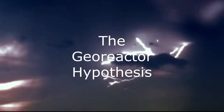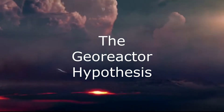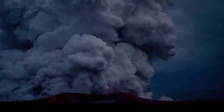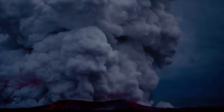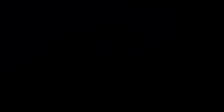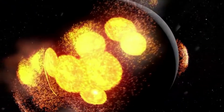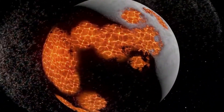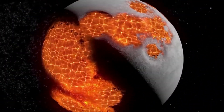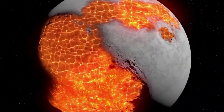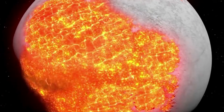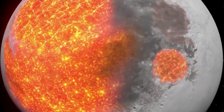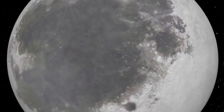The georeactor hypothesis states that uranium was the most abundant element in the Earth's crust. Because of the fast spinning, the centrifugal force was high and it created friction, heated up the uranium, and started a nuclear chain reaction and exploded. This powerful explosion sent out debris from Earth and created the moon.